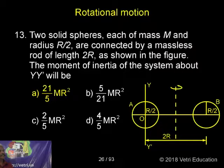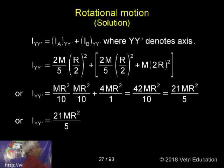What is the moment of inertia? Here the moment of inertia about a perpendicular. That is, how we can derive it? IY' equals IA_YY' plus IB_YY', where YY' denotes the axis.